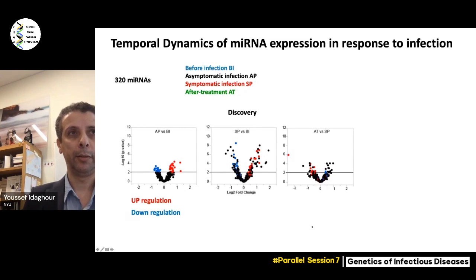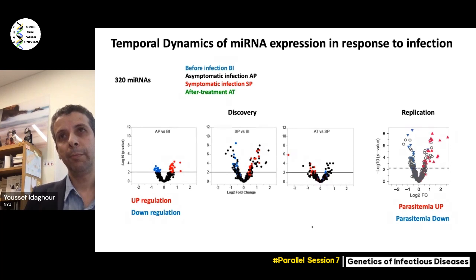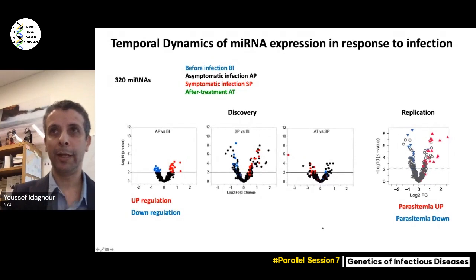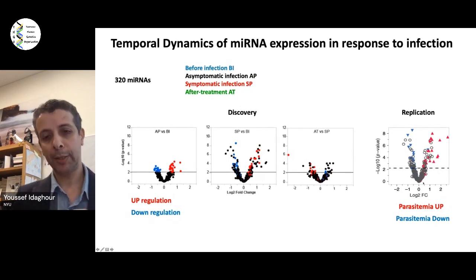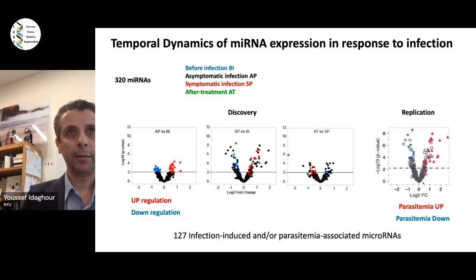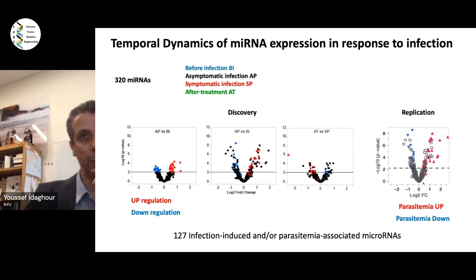In the replication study, we focused mainly on parasitemia as one of the main phenotypes of interest, and we were very pleased to detect many microRNAs positively correlated with parasitemia — upregulated during infection — and vice versa, with the exception of one microRNA. This was really indicative of a potential association between parasitemia and those microRNAs, hence probably with some functional consequences. In total, we detected 127 microRNAs that are either induced by infection or associated with parasitemia.